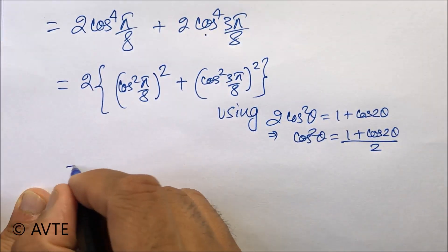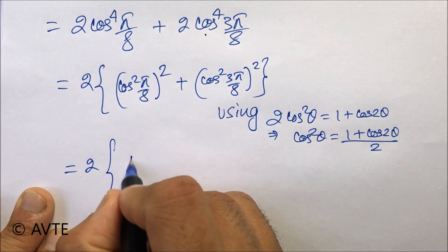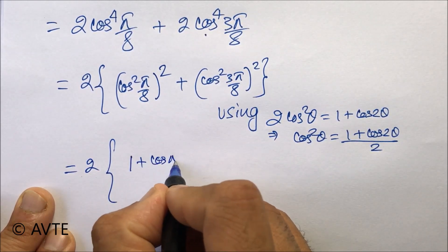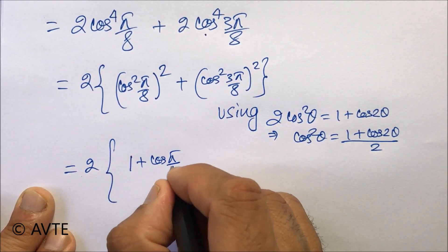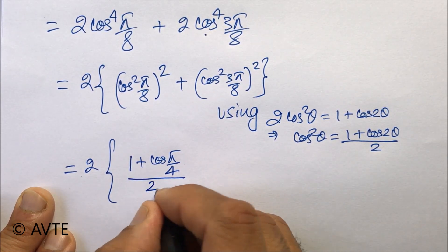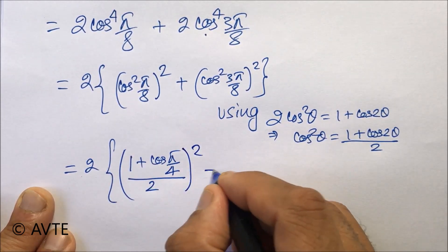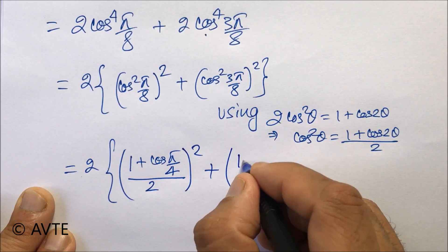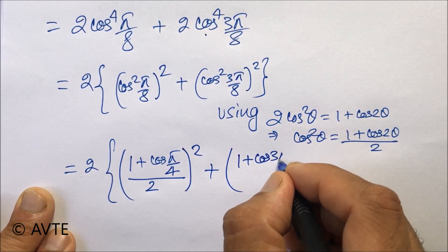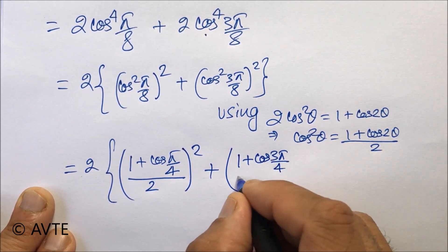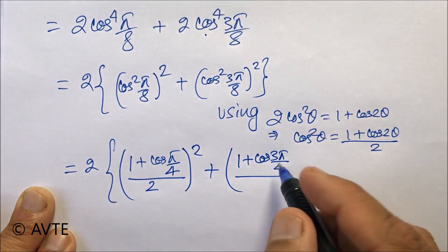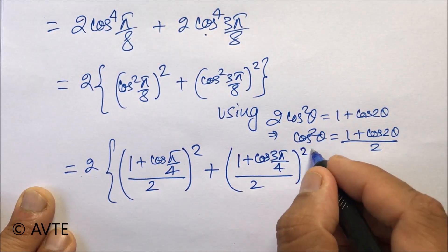With this it will turn to multiple angle divided by 2, the whole square. The double of 3π/8 is 3π/4, the whole square.